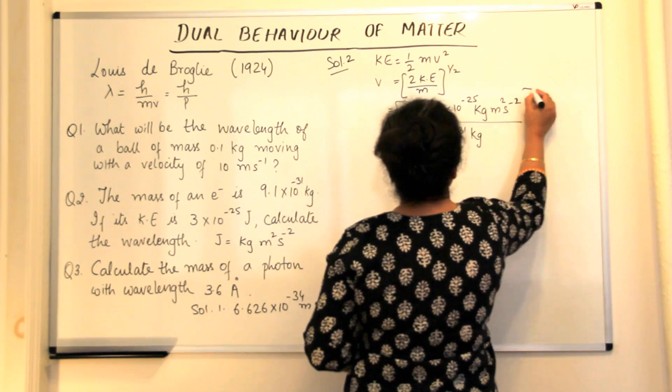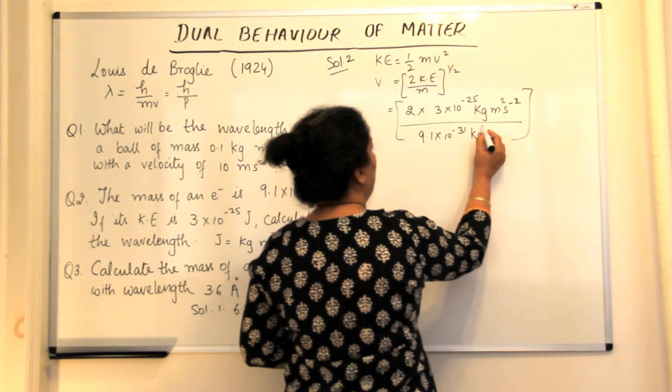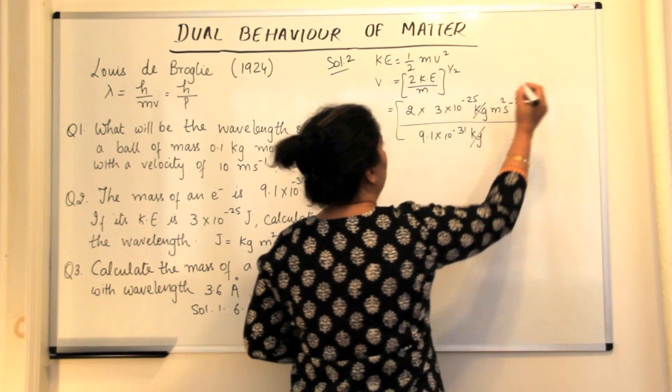which is 9.1 into 10 to the power minus 31 kgs. Now why we do this is so that we can cancel out the units properly. The kg and kg will be cancelled out.